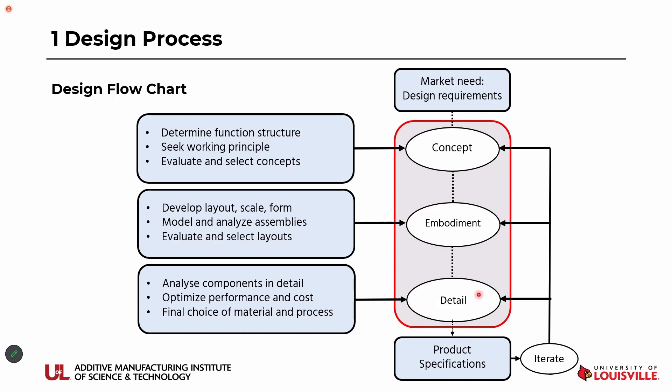These are the main steps in the product design, and it is an iterative process. Any mechanical product design is an iterative process. You will initially get a prototype, then enhance different functions of the product, and redesign. How is it different in additive manufacturing? This is for traditional manufacturing — is it different for additive manufacturing? That's the question.